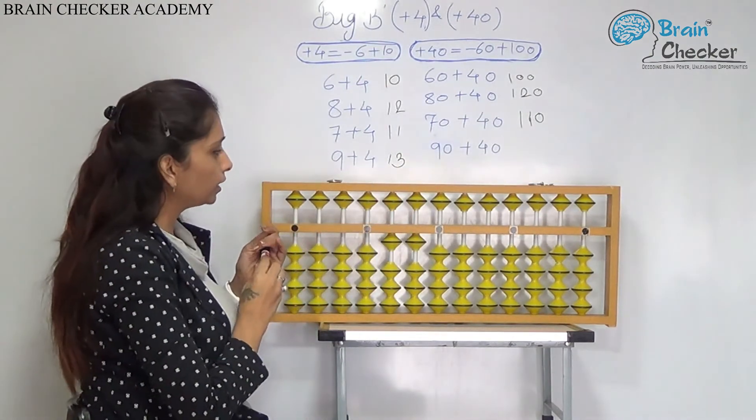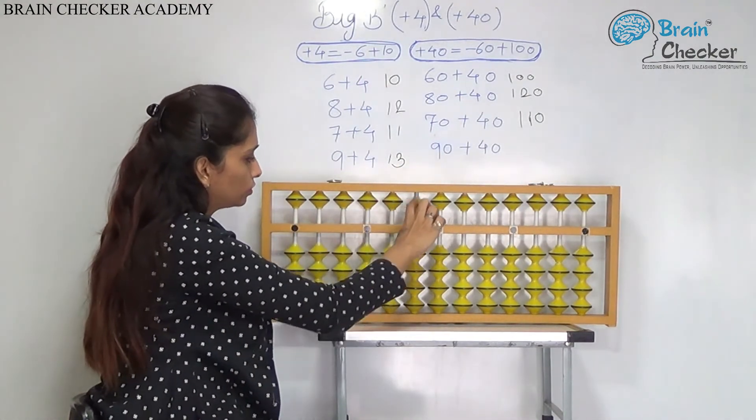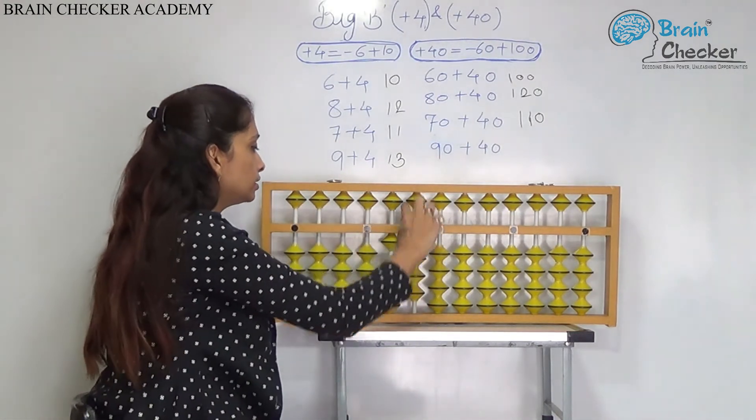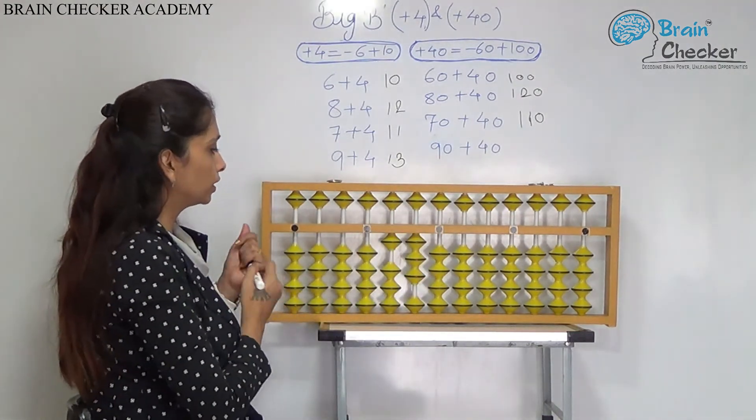Next, 90 add 40. 90 add 100 less 60. Answer is 130.